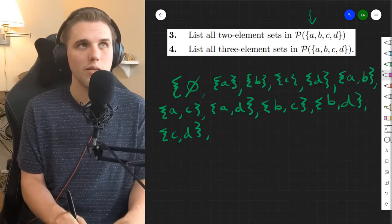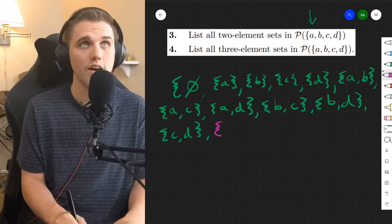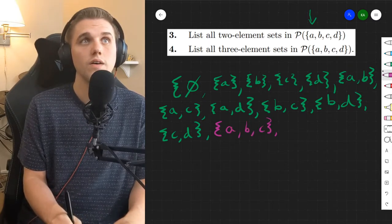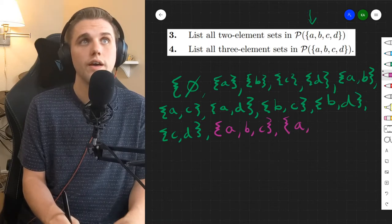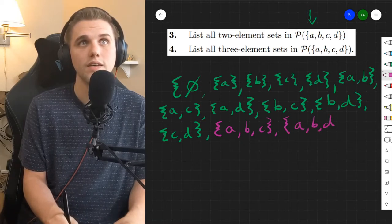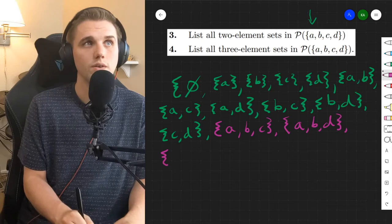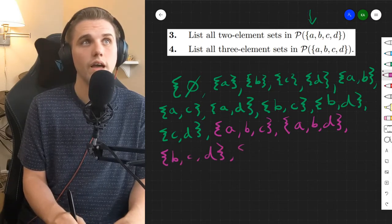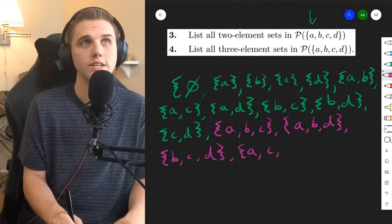What about the sets with three elements, or the subsets I should say, of three elements? Well, we could do A, B, and C. We could do A, B, and D. We can do B, C, and D, and A, C, and D.